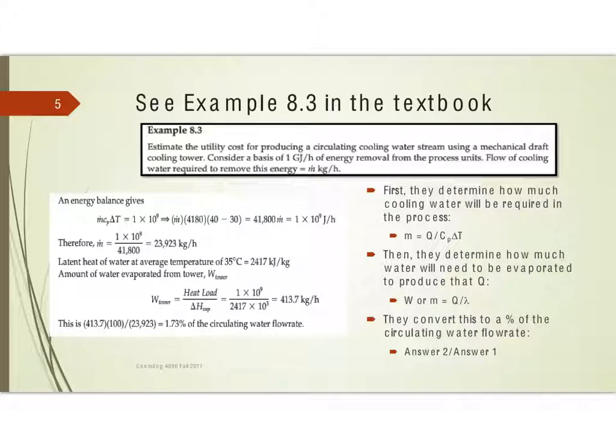So, the first thing they do is they figure out how much cooling water is going to be required. So, just doing a simple material balance, q equals mc sub p delta t, solve for the mass of the cooling water. Remember, our delta t is going to typically be going from 30 degrees to 40 degrees. So, 10 degrees is our usual design delta t.